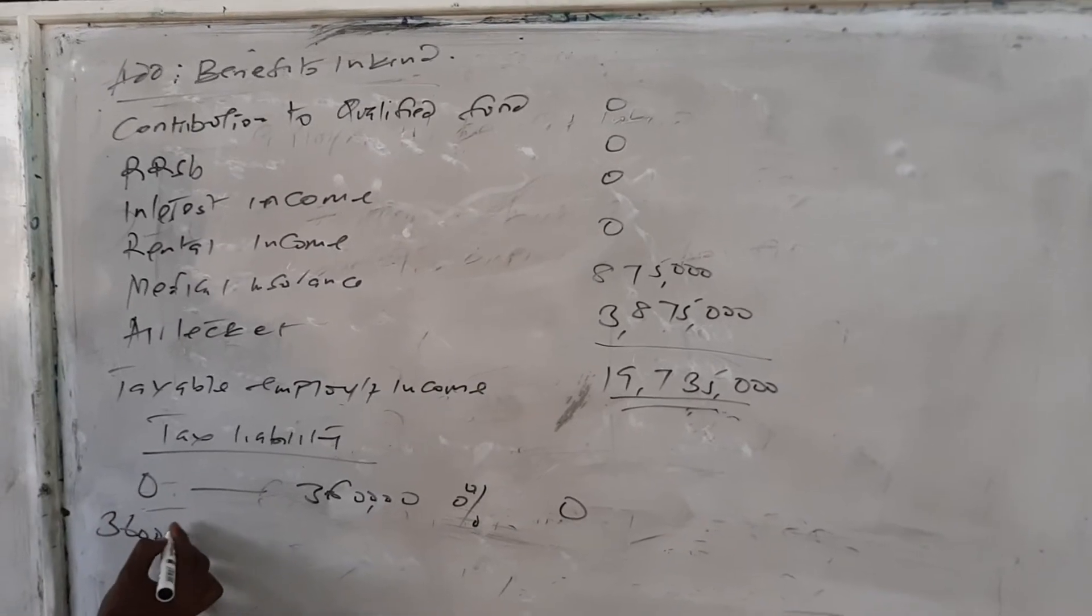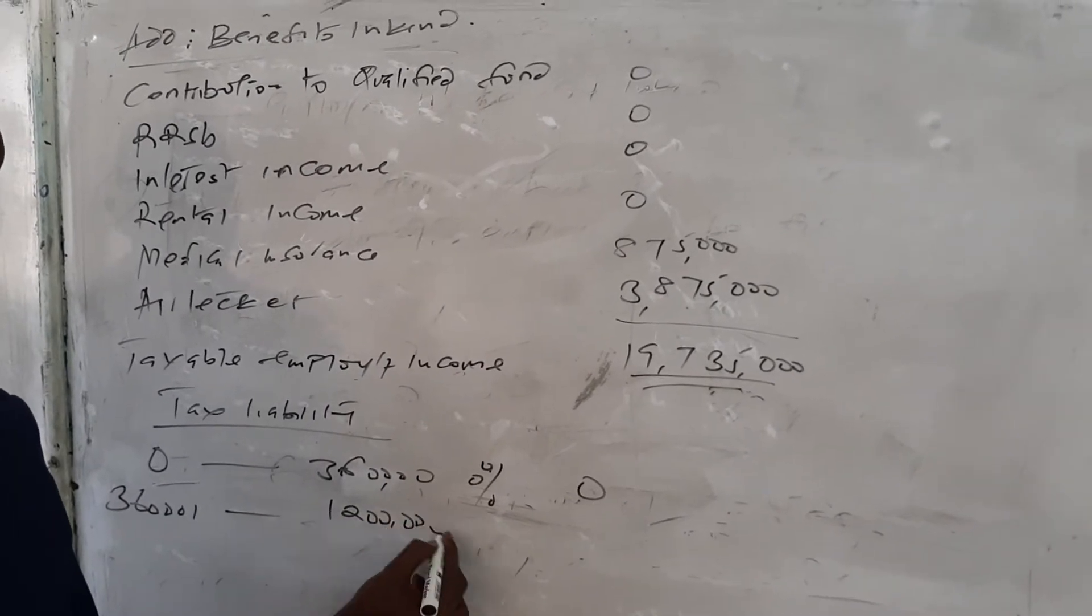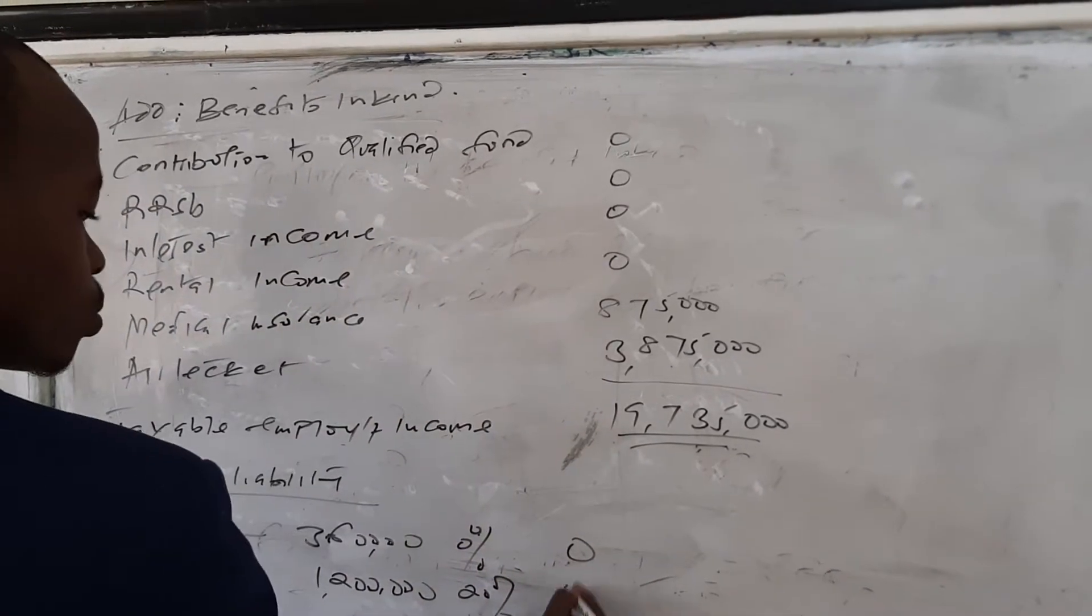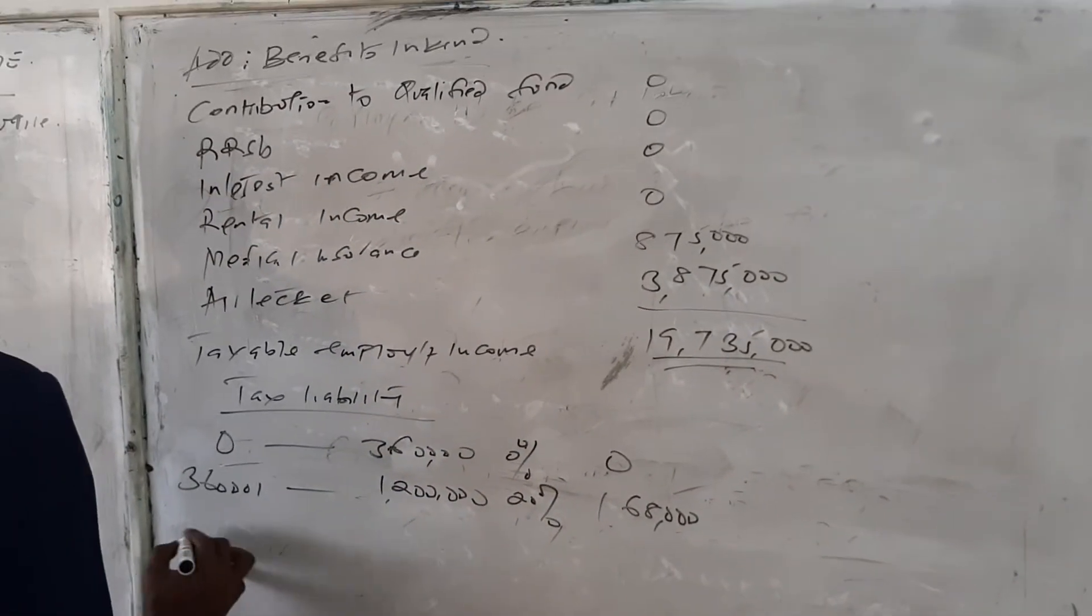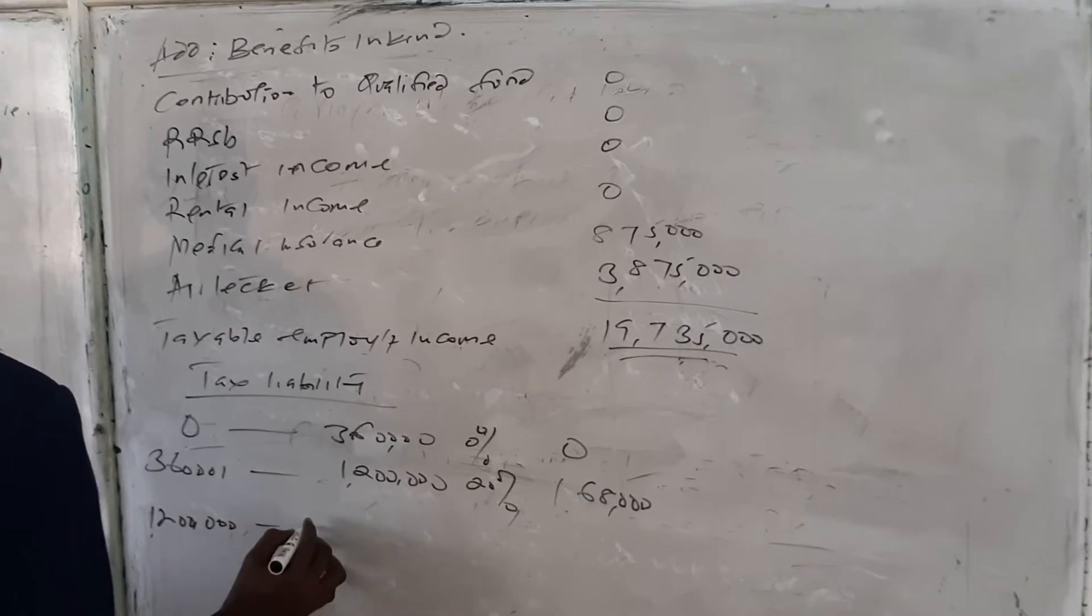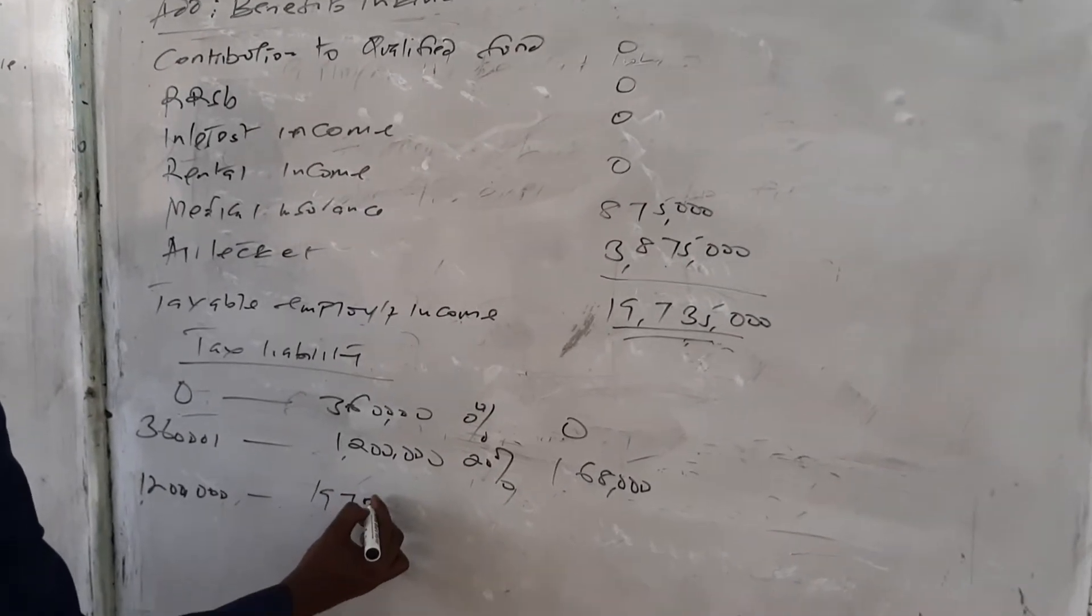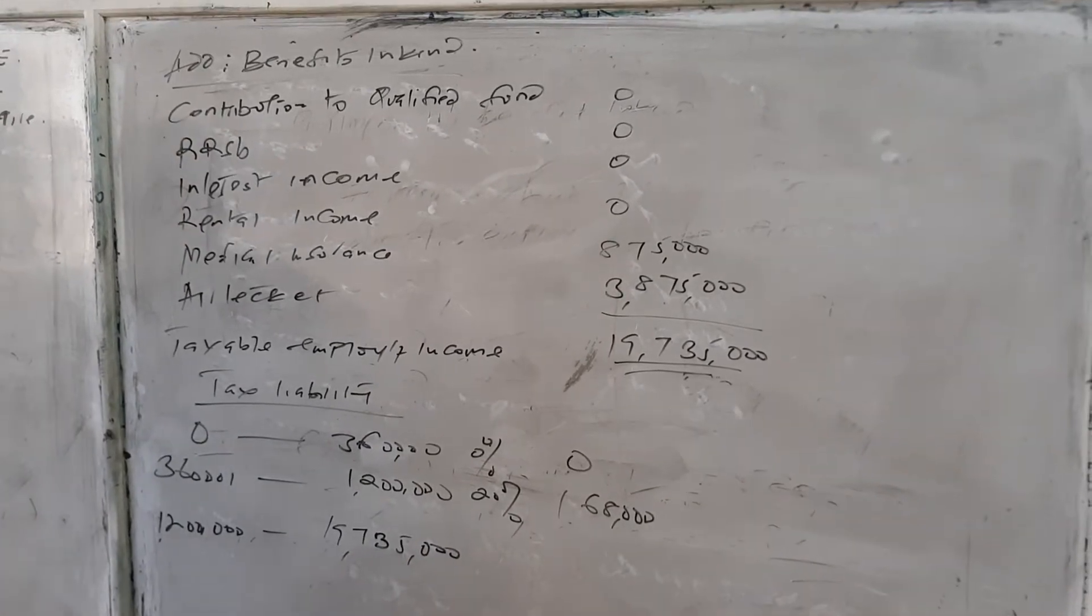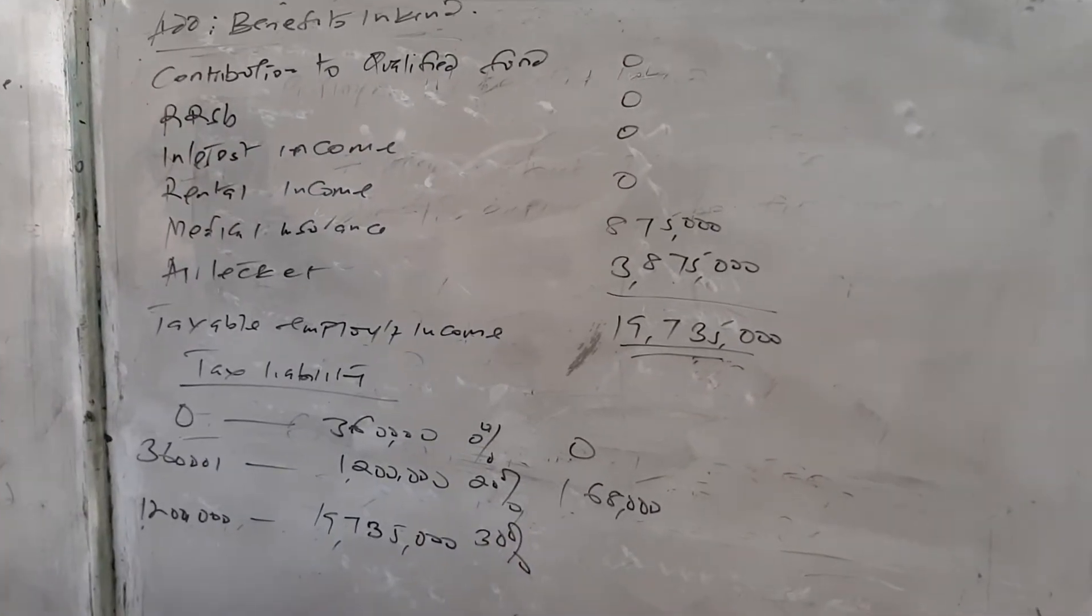From 360.1 to 1.2, this is 20%, which is equivalent to 168.7. So above 1.2, we have the taxable amount of 19 million, 735,000. So this one we apply 30%, which is going to give us...